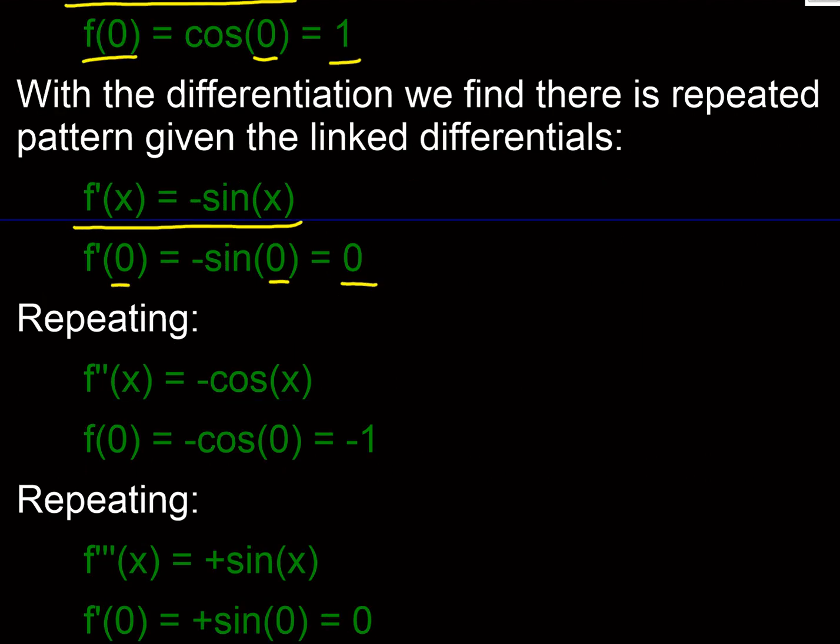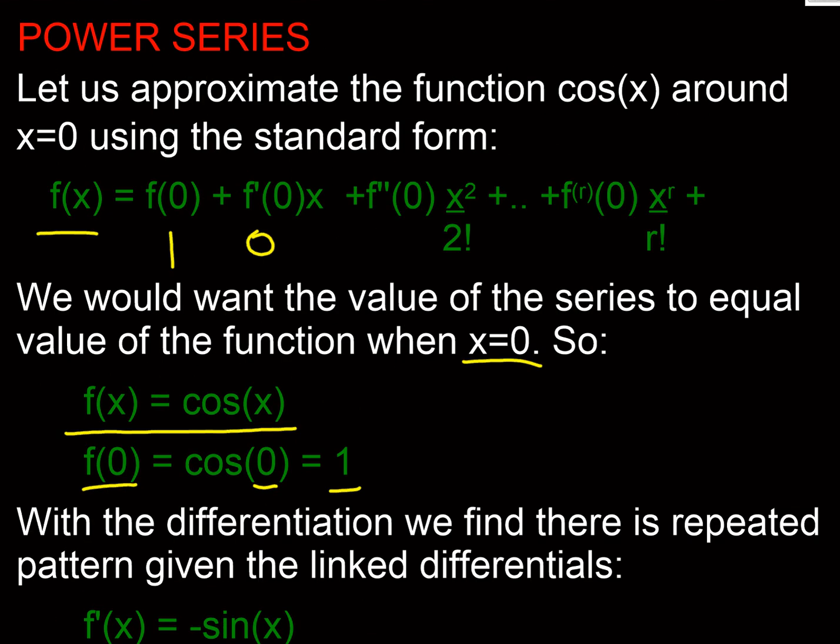If we differentiate minus sin of x we get minus cos of x, and when x equals 0, minus cos of x equals minus 1. So we now know that f double dash is -1.